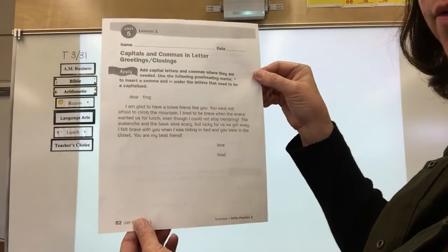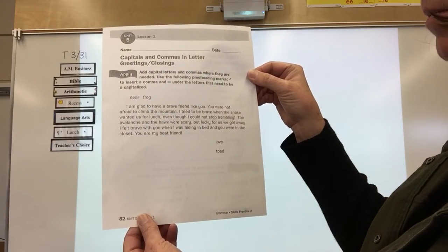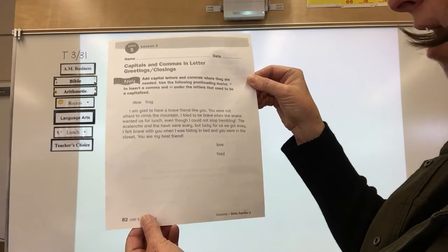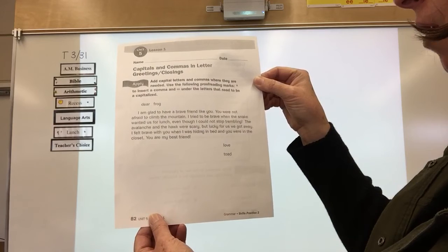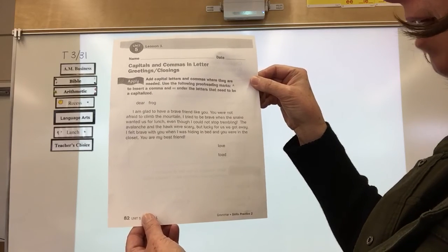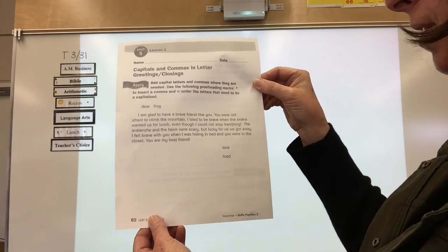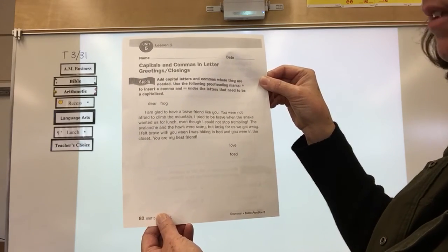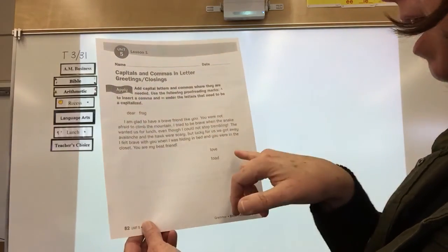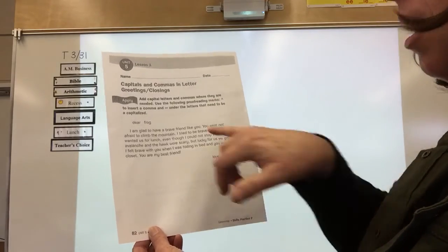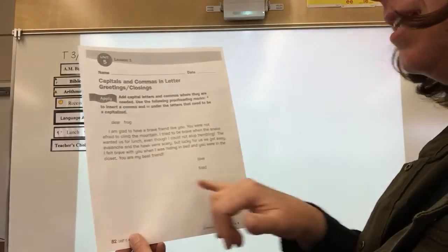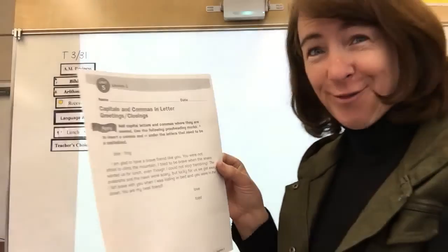Here's what it said. Now remember, we said that Toad was going to write to Frog this time. Dear Frog, I am glad to have a brave friend like you. You are not afraid to climb the mountain. I tried to be brave when the snake wanted us for lunch, even though I could not stop trembling. The avalanche and the hawk were scary, but lucky for us, we got away. I felt brave with you when I was hiding in bed and you were in the closet. You are my best friend. Love, Toad. Your job right now is to use proofreader marks to fix Dear Frog and use proofreader marks to fix Love, Toad. There's no mistakes in the letter. Just at the greeting and in the closing. Please do that. And then you're done with this work for today.